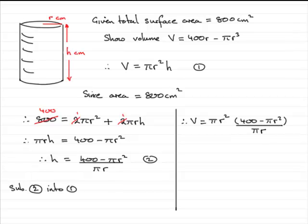Now what I can do is cancel the pi's out, so we've got that, and I can cancel this r into r squared to leave me with just a single r. So that therefore, when I multiply r with the bracket, what I get is 400r minus pi r cubed, and that's what we had to show.